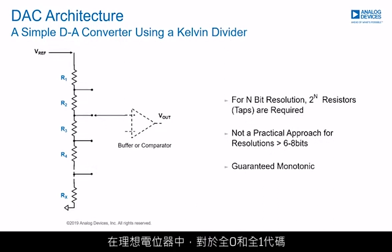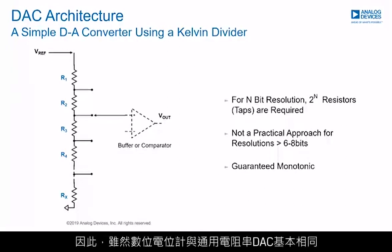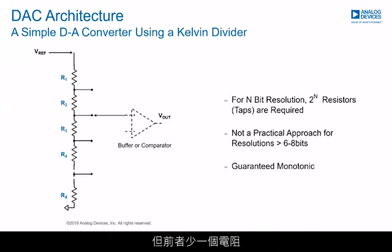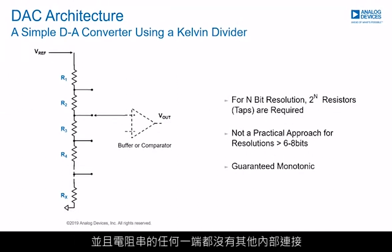In an ideal potentiometer, all-zeros and all-ones codes should connect the variable tap to one or other end of the string of resistors. So a digital potentiometer, while basically the same as a general-purpose string DAC, has one fewer resistor and neither end of the string has any other internal connection.